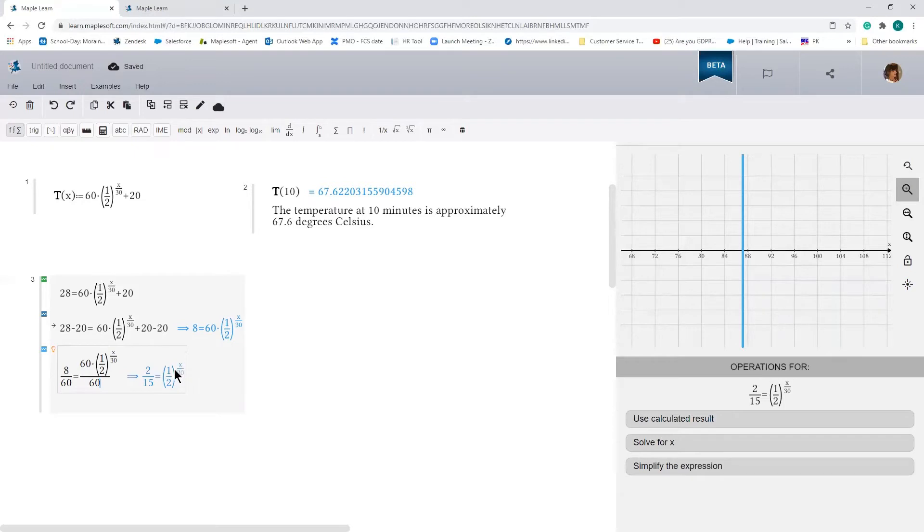Now what we need to do is isolate for the exponential term. And we can do this by remembering the inverse log property, which states that the log base a of a to the x is x. Let me write that down.